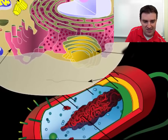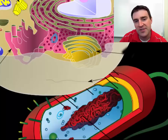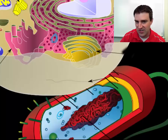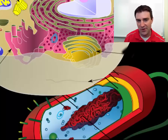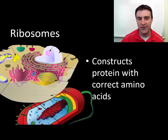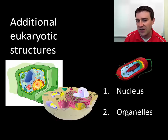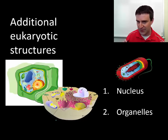Ribosomes are these little dots visible in both eukaryote and prokaryote cells. Ribosomes take the instructions coded in the nucleic acids — RNA and DNA — and construct proteins correctly by taking the right amino acids and putting them together in the right order. So ribosomes actually build the proteins. That's pretty much all a prokaryote has: a membrane, DNA and RNA, and ribosomes.